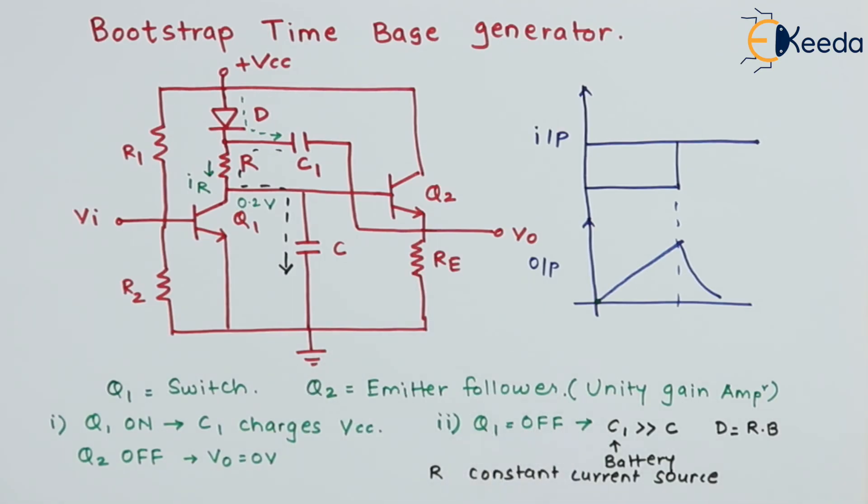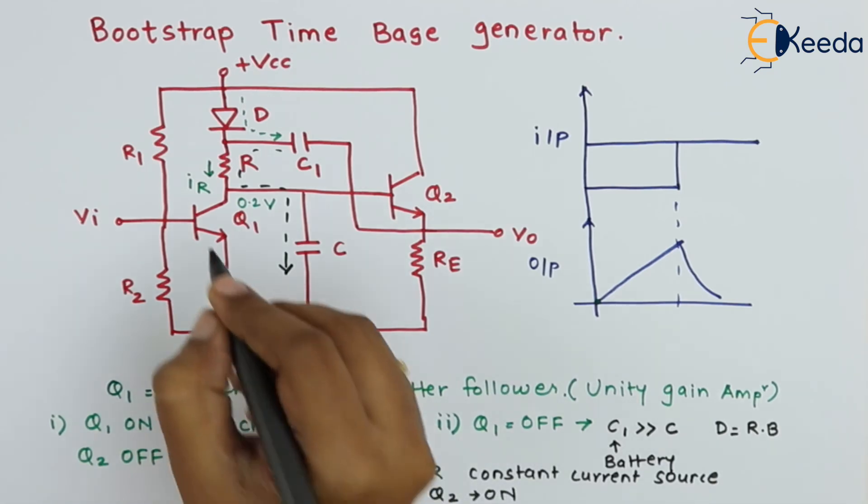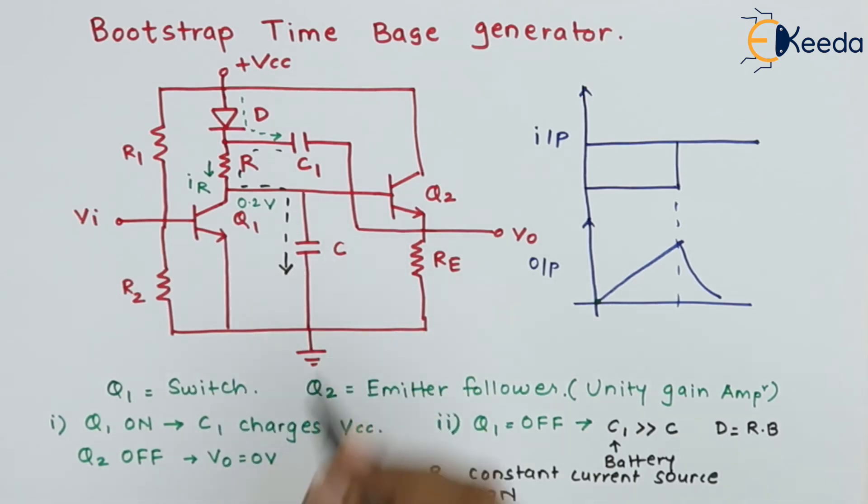So when transistor Q1 is off, we can say transistor Q2 is on. Because as the voltage across the capacitor increases, the base-emitter voltage of Q2 also increases and transistor Q2 will be on.